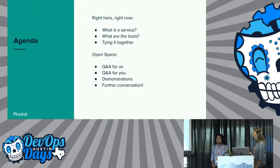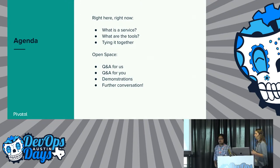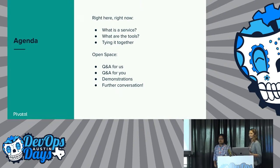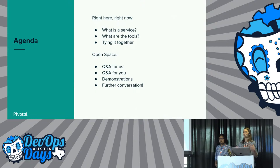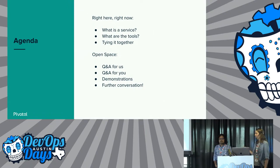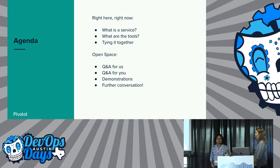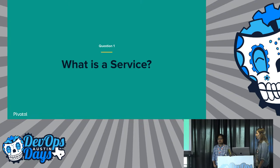So our agenda, about building a shared vocabulary: we're going to start with defining what a service is, specifically. Service is an overloaded term, and we all want to share the same dictionary when having a conversation in the open space. We will talk about the tools that we see and provide a foundation around those. Then we will start tying it together, and that will flow into the open space.